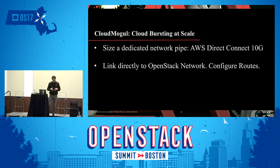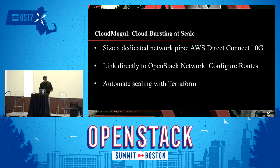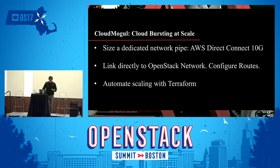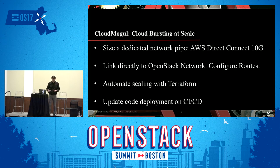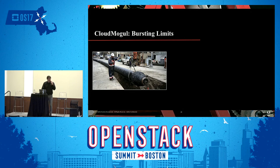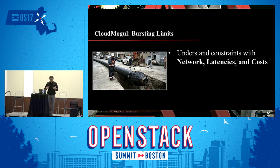We linked that directly to our OpenStack network using some routing, and we have a fully AWS VPC dedicated to bursting on which we provision compute nodes. We automated all scaling with Terraform, leveraging the new tools available to us. Terraform makes it very easy to deploy a new set of resources in an AWS VPC. The only thing left is making sure our CI/CD pipelines that deploy the application continue to work seamlessly for the AWS VPC deployment.